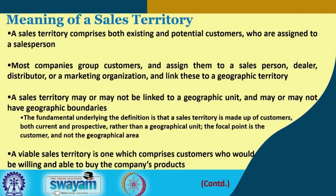The focal point is on the customer, not the geographic area. A sales territory may or may not have geographic boundaries; it comprises existing and potential customers assigned to a dealer, distributor, salesperson, or marketing organization. A viable sales territory is one which comprises customers who would be willing and able to buy the company's products — customers who have the desire to buy and also the ability to pay. This is what makes the territory viable.